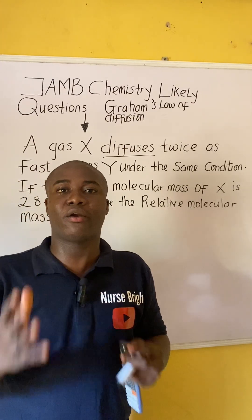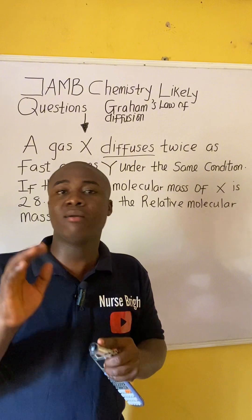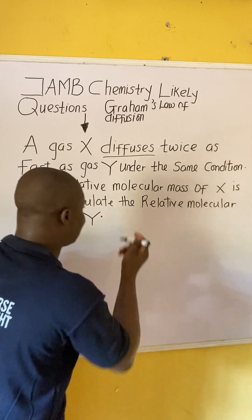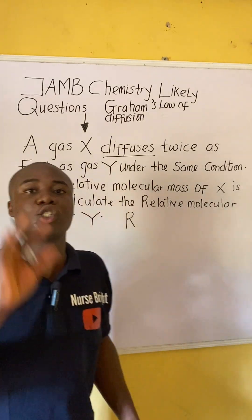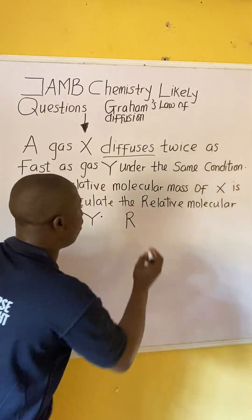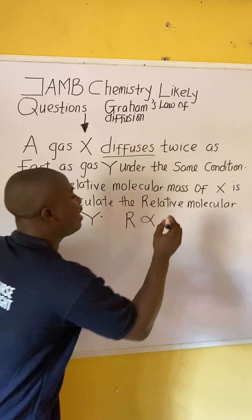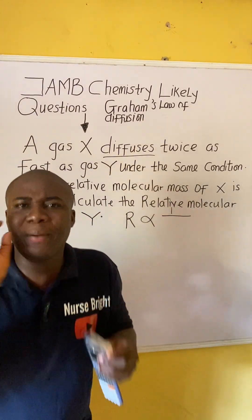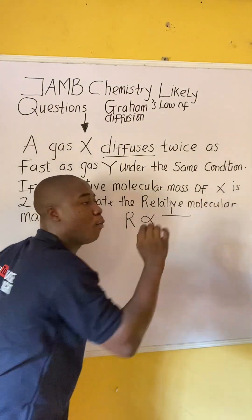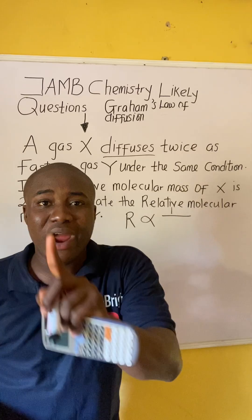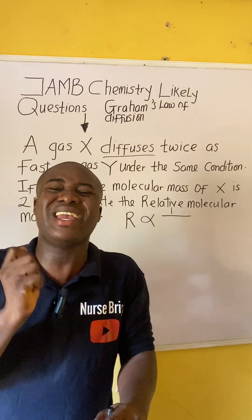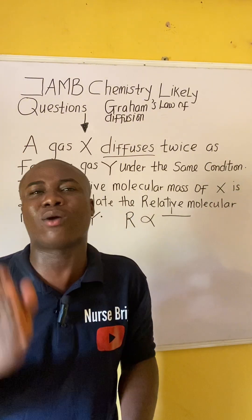Graham's Law of Diffusion states that the rate of diffusion of a gas — where rate is symbolized as R — is inversely proportional to the square root of its density or its relative molecular mass. Whenever we talk about inverse proportionality, it becomes 1 over that quantity.